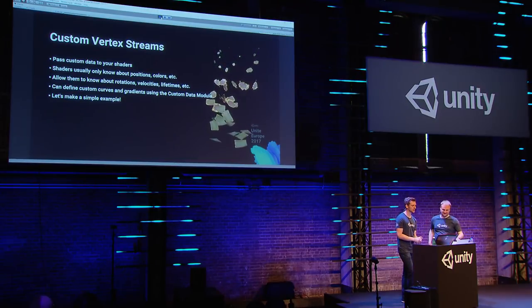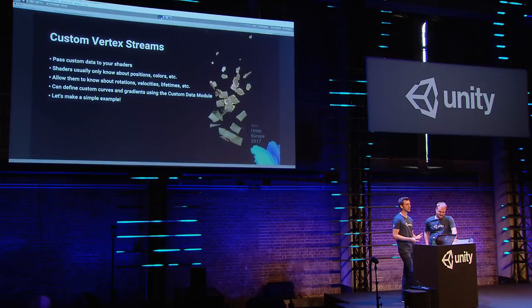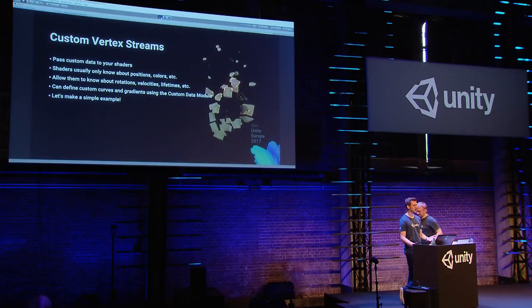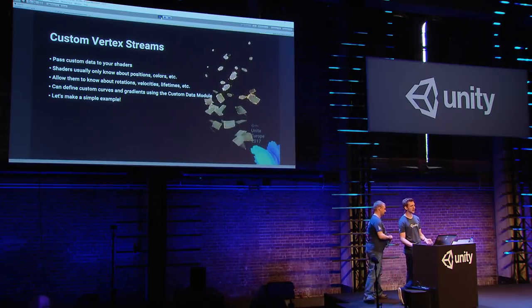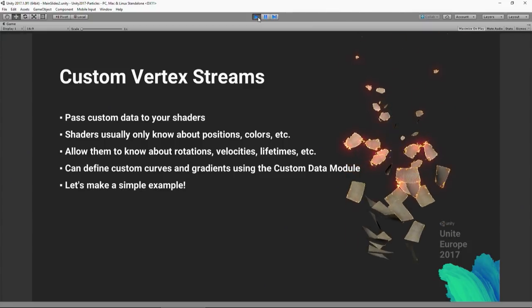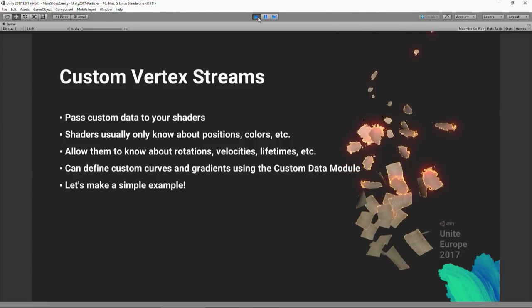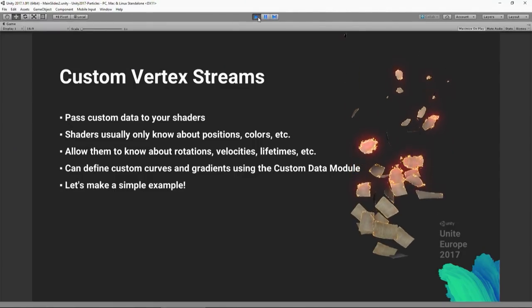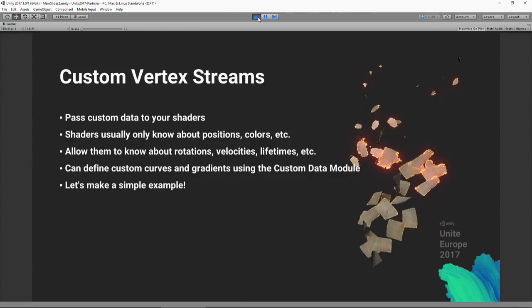The last big feature is custom vertex streams, added in 5.5 and improved in 5.6. It's a fairly advanced feature that allows you to pass all particle data into your shaders. Usually a shader only knows about position, color, texture coordinate data, and normals. Now you can pass particle-specific properties such as rotations, velocity, and how long the particle has been alive — enabling all kinds of new custom effects directly in shaders.